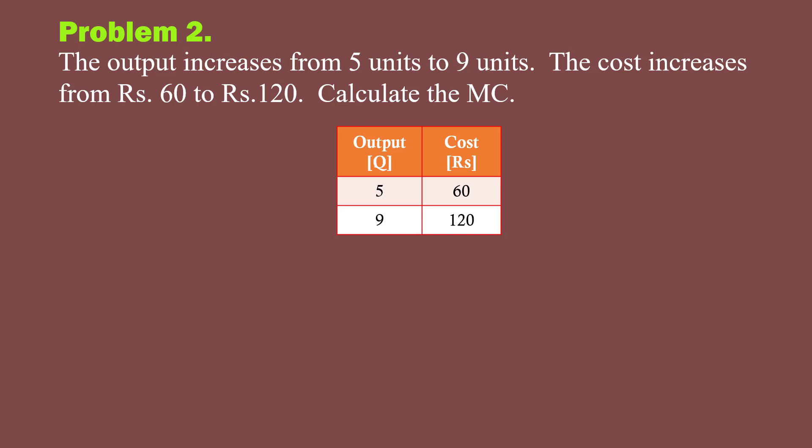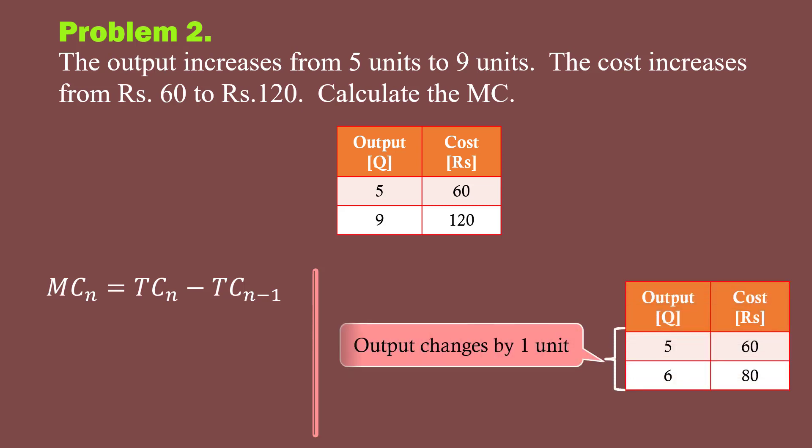you cannot use the formula marginal cost of the nth unit equals total cost of the nth unit minus total cost of the n-1th unit, because the output is not increasing one by one. In other words, the change in output is not by one unit as you got in problem 1.